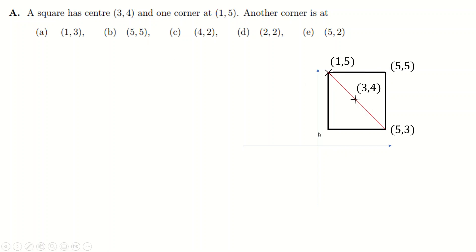But if you do the same thing for another point and say it's three up, so it's still going to be three up here and one across — giving (1, 3) — that's also one of the answers. And it can't be both. The problem is this distance is four and this distance is two, and that's not a square. So you can't be this lazy. Be careful doing sketches on blank paper, because it's very easy to massively misinterpret and misdraw the question.